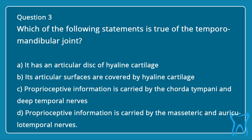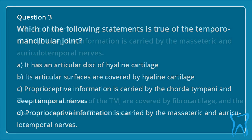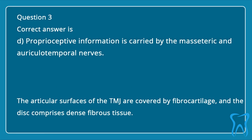Question 3. Which of the following statements is true of the temporomandibular joint? a. It has an articular disc of hyaline cartilage. b. Its articular surfaces are covered by hyaline cartilage. c. Proprioceptive information is carried by the chorda tympani and deep temporal nerves. d. Proprioceptive information is carried by the masseteric and auriculotemporal nerves. Correct answer is D. The articular surfaces of the TMJ are covered by fibrocartilage, and the disc comprises dense fibrous tissue.